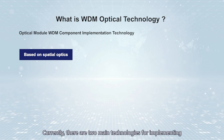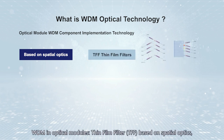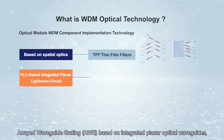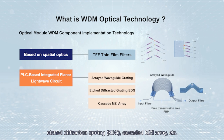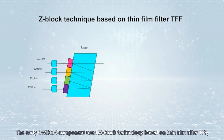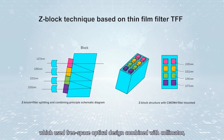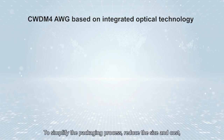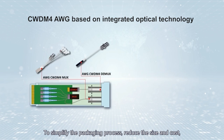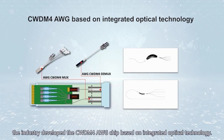Currently, there are two main technologies for implementing WDM in optical modules: thin-film filter (TFF) based on spatial optics, arrayed waveguide grating (AWG) based on integrated planar optical waveguides, etched diffraction grating (EDG), cascaded MZI array, and others. The early CWDM components used Z-block technology based on thin-film filter TFF, which used free-space optical design combined with CWDM wavelength filters to combine and split waves by micro optics.